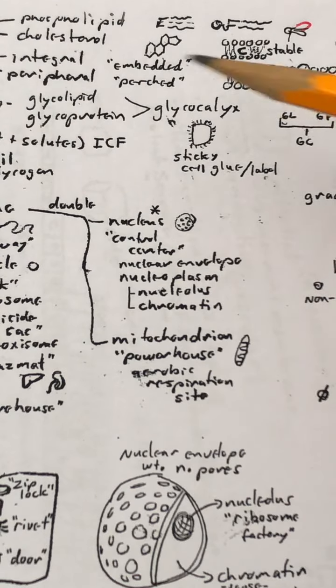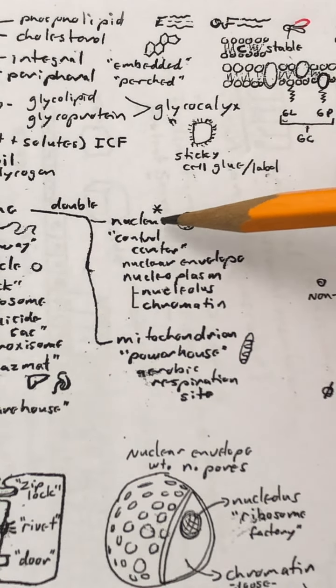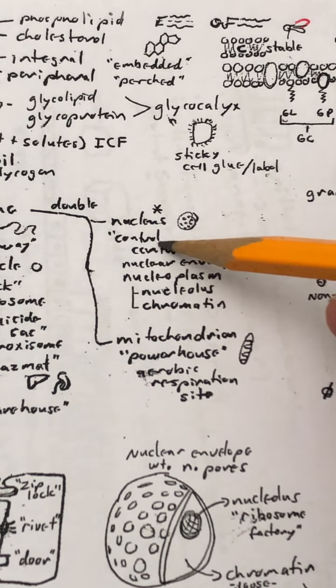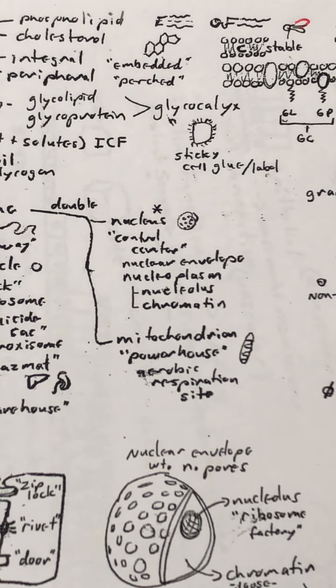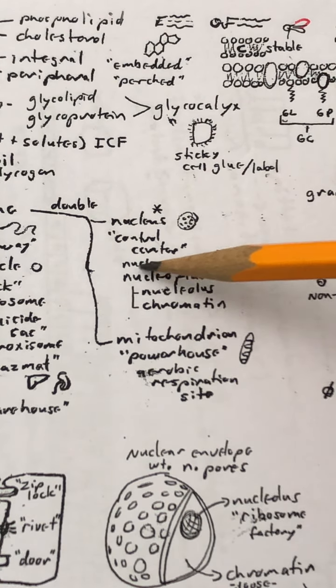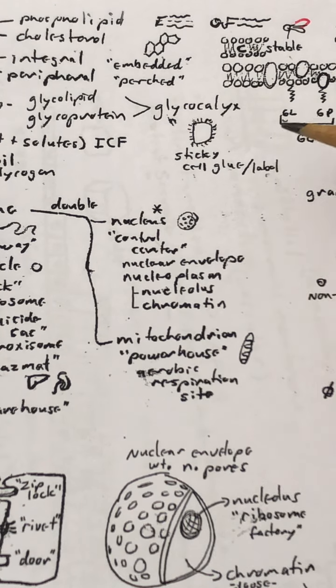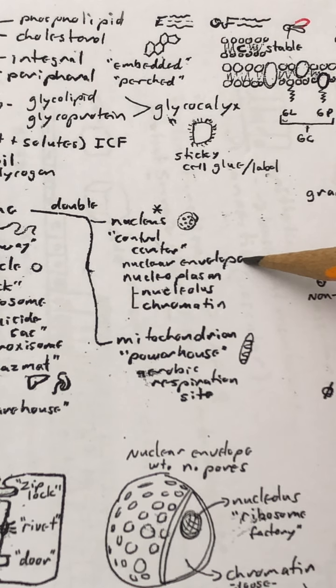With double membranes, there's only two examples, and that's nucleus and the mitochondria. The nucleus has a double membrane around it. It is the control center of the cell in that it has the majority of the DNA, the blueprints for life, inside of them.